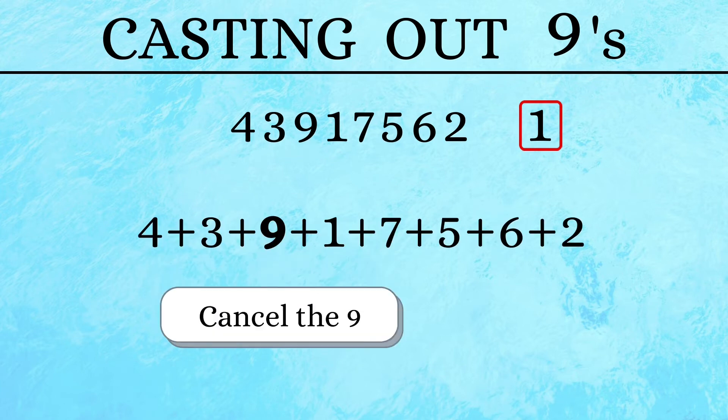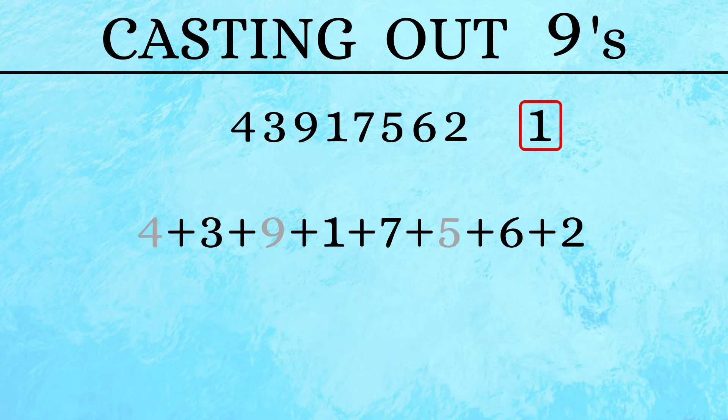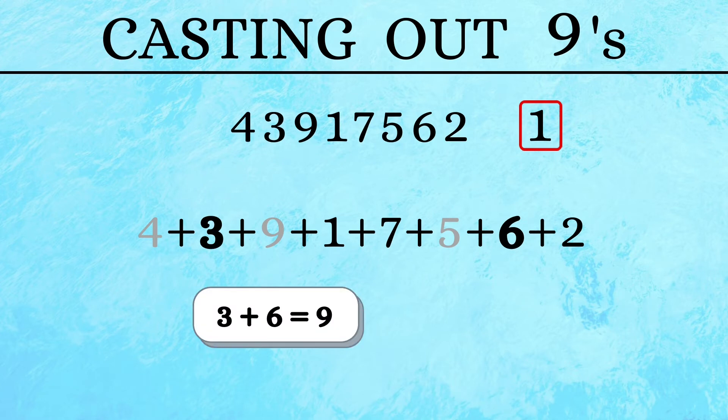We first cancel the 9. 4 plus 5 makes a 9, so we cancel 4 and 5. 3 plus 6 also makes a 9, so we cancel 3 and 6.